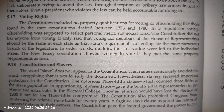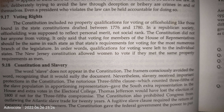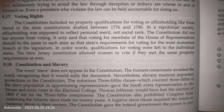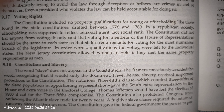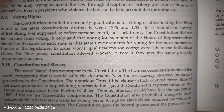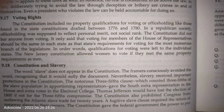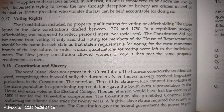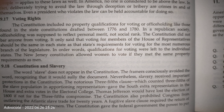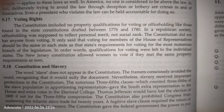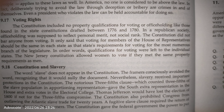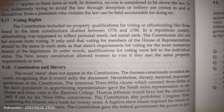An important feature is the Constitution and slavery. The word 'slave' does not appear in the Constitution — the framers consciously avoided the word, recognizing it would be controversial. Nevertheless, slavery received important protections. The notorious three-fifths clause counted three-fifths of the slave population in apportioning representation, giving the South extra representation in the House and extra votes in the Electoral College.